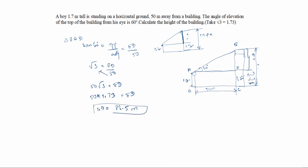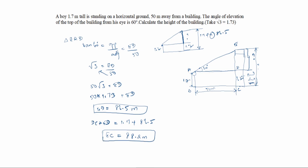50 into 1.73 equals ED. So ED = 86.5 meters. Now we add DC plus ED: 1.7 plus 86.5 equals 88.2 meters. So EC, the whole height of the building, is equal to 88.2 meters. The height of the building is 88.2 meters.